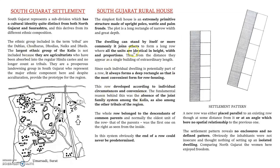The South Gujarat settlement pattern and architecture can be understood by dividing them into two types: rural and urban. If we take the rural house, they have a very primitive structure made up of bamboo or whatever kind of wood is available there. The basic structure consists of vertical poles.